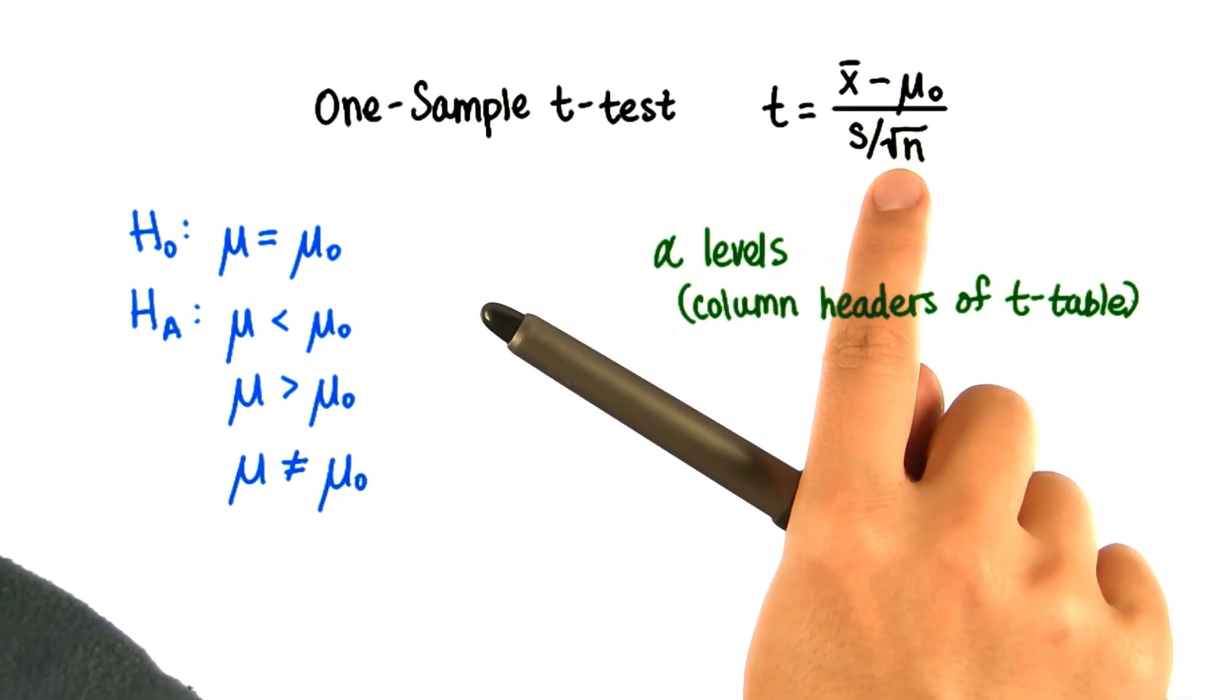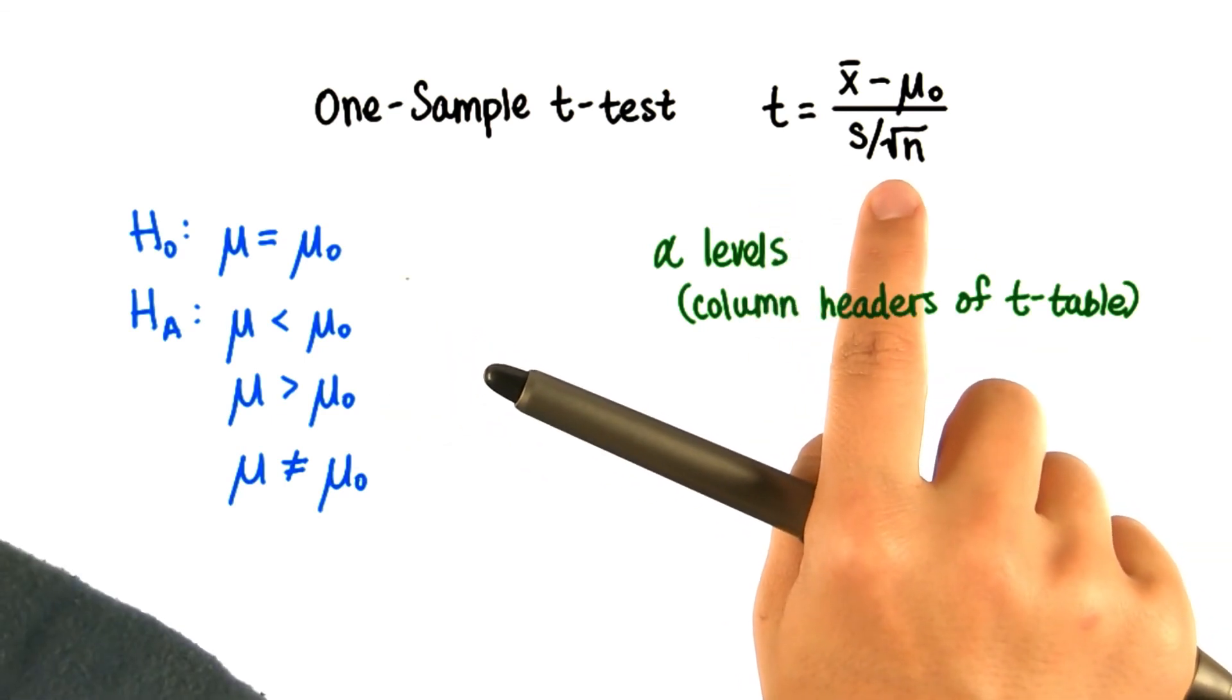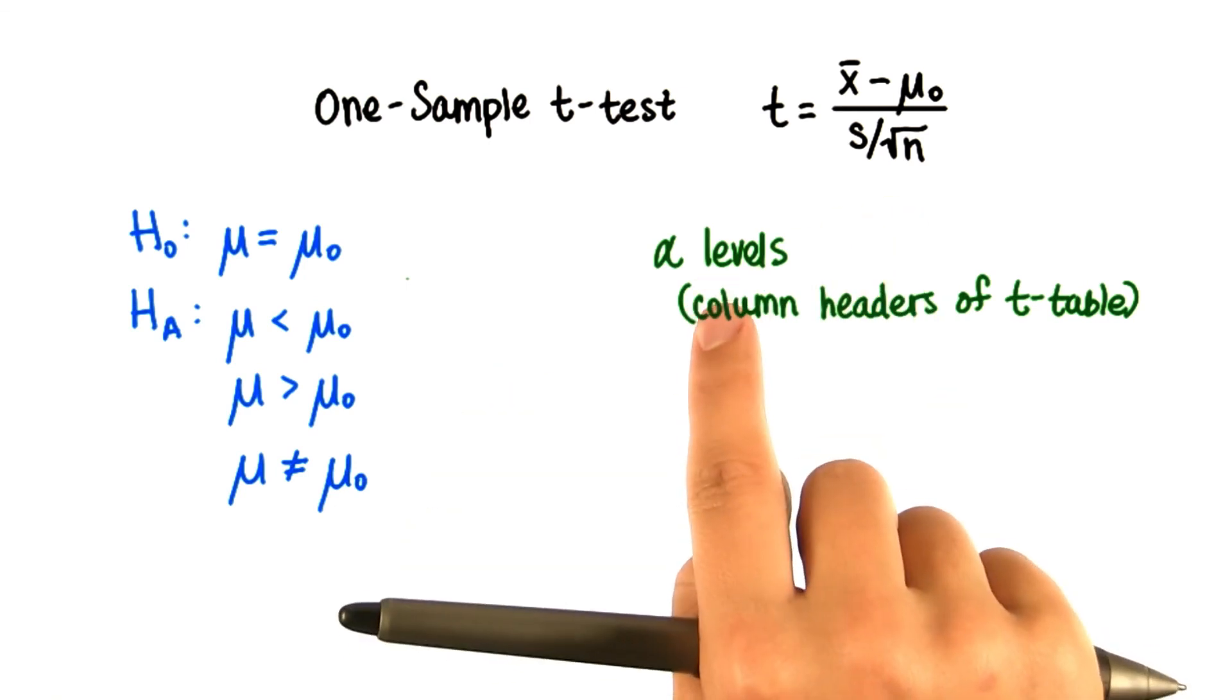If our t-statistic is greater than these t-critical values, or if we get a negative t-statistic that is less than the negative t-critical value cutting off that alpha level, then we can reject the null.